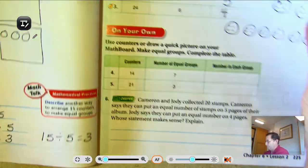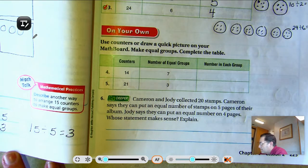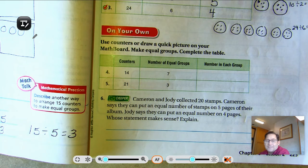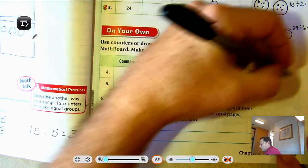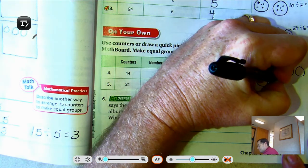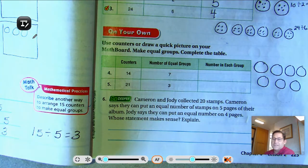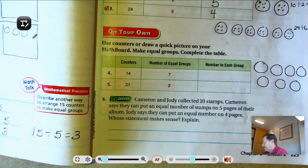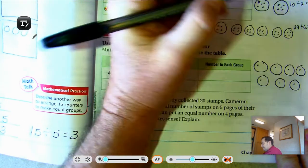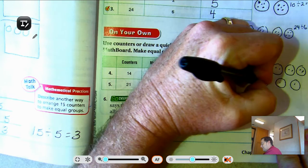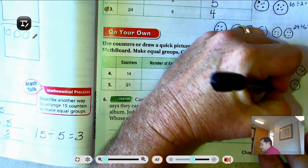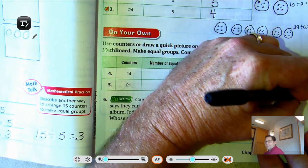All right, let's continue, number 4. Use counters or draw a quick picture, make equal groups, complete the table. 14 counters shared with 7 groups. All right, so 7 circles to represent the 7 equal groups. And we're going to share 14 counters. All right, so that's 7, 8, 9, 10, 11, 12, 13, 14. All right, so there's just 2 in each group.